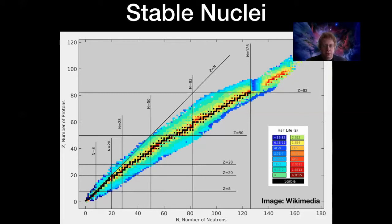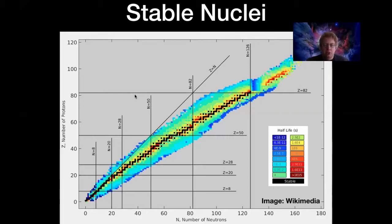Before going into the details of this process, I want to talk about stable nuclei. This chart shows on the y-axis the number of protons in any hypothetical atomic nucleus and on the x-axis the number of neutrons. The colors indicate whether these nuclei can even exist — the gray areas mean there are no nuclei with such a weird ratio of protons to neutrons. The color also indicates how long these nuclei stay together if they do exist.